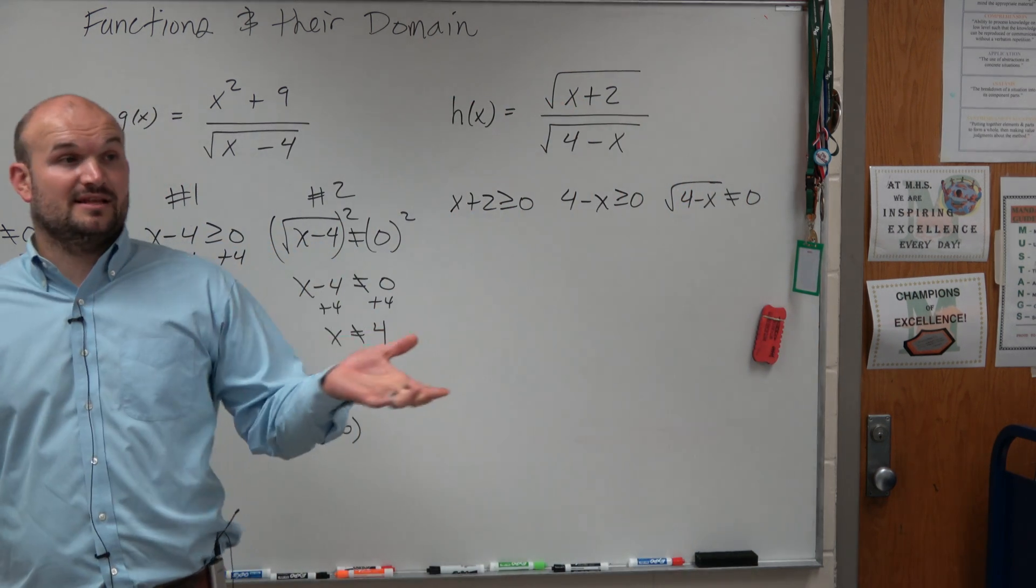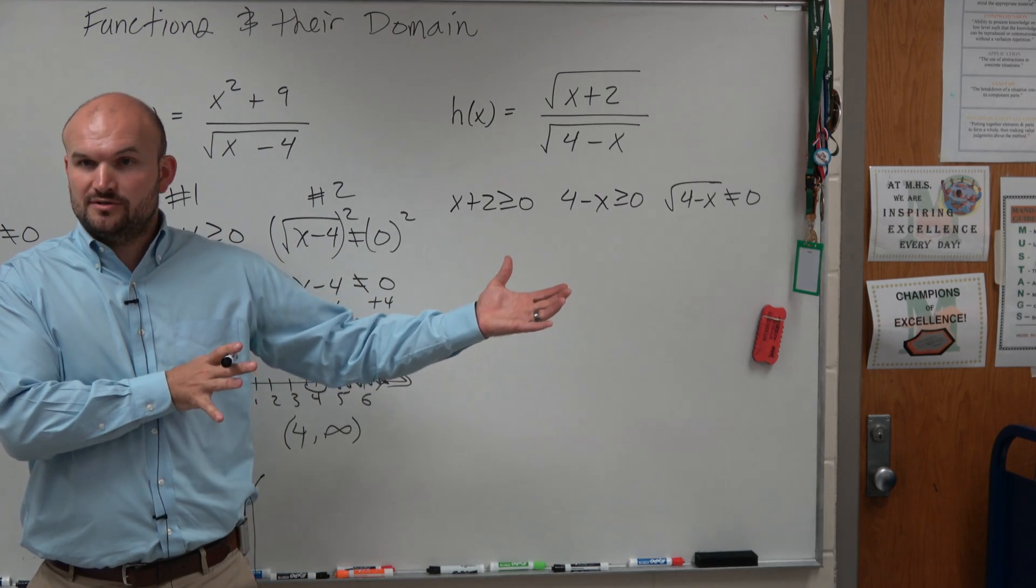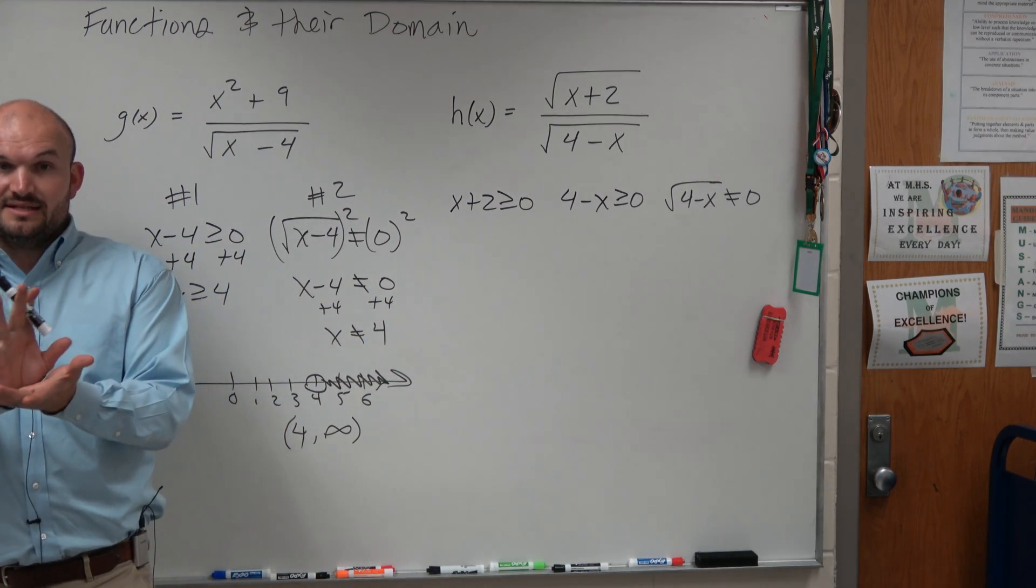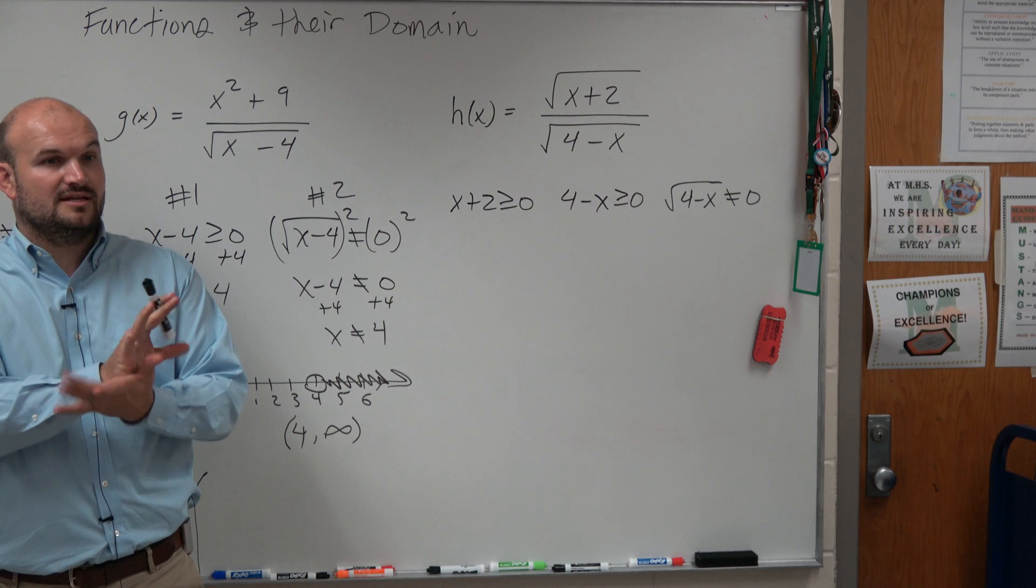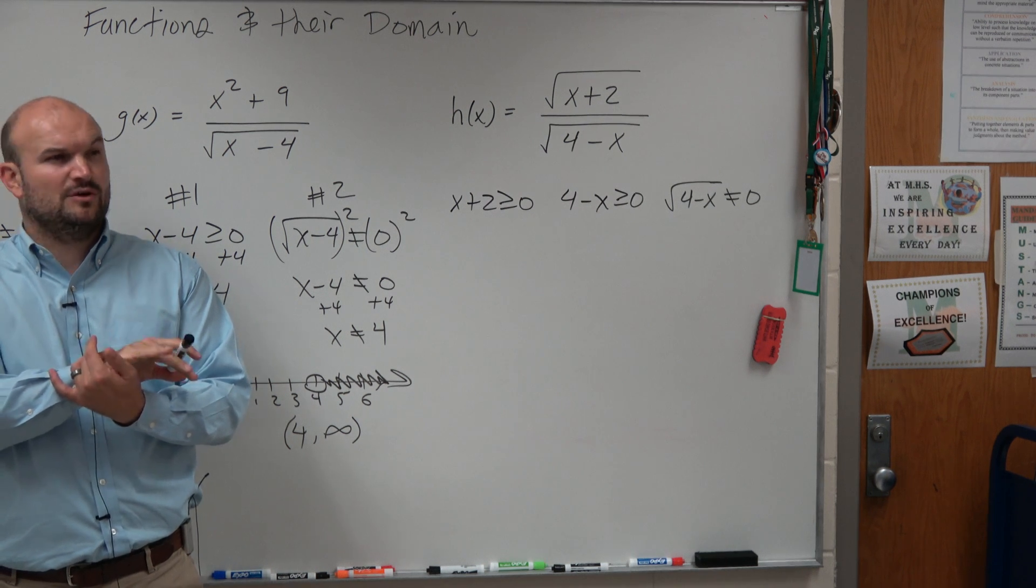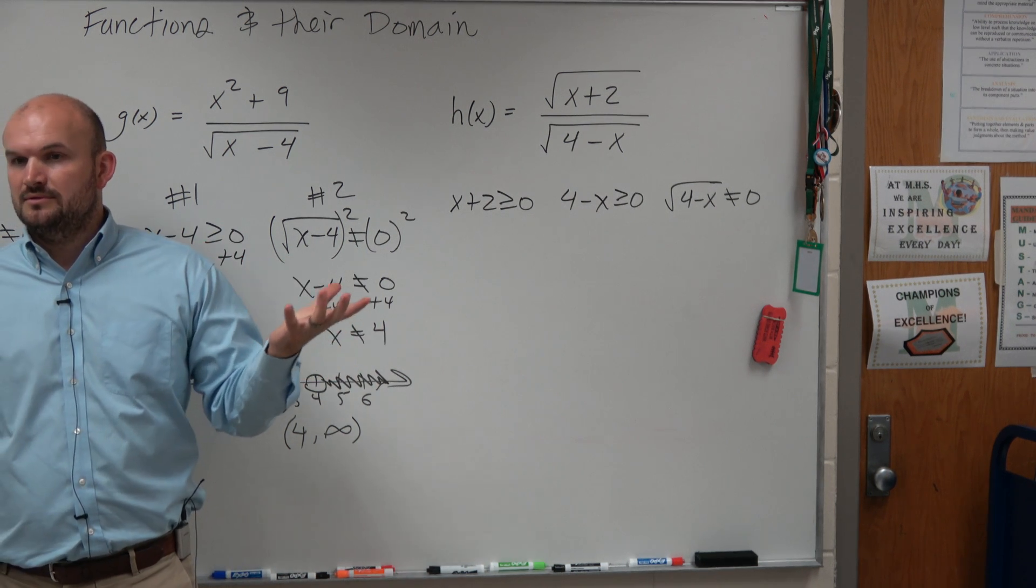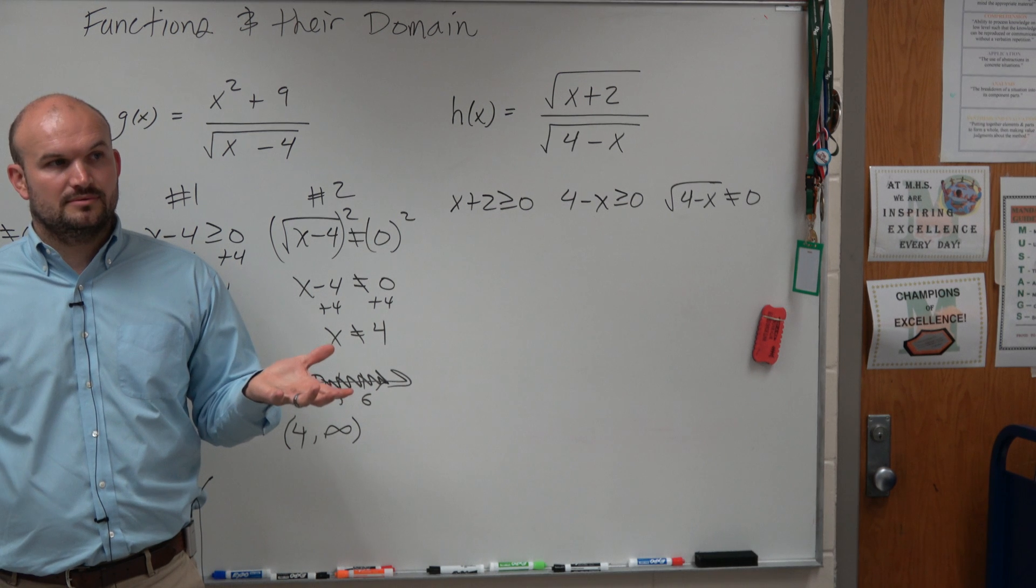Does everybody see what I did? I took anything that was under a radical and made it greater than or equal to 0, and then I took whatever was the denominator and set that cannot equal 0. Anybody have any questions on my setup?